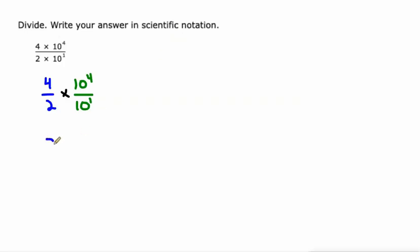Well, 4 divided by 2 is 2. And 10 to the 4th divided by 10 to the 1st is 10 to the 3rd, because we just subtract the exponents when you're dividing numbers with the same base. We learned that about exponents. So there we go. We got a number that's in scientific notation: 2 times 10 to the 3rd.